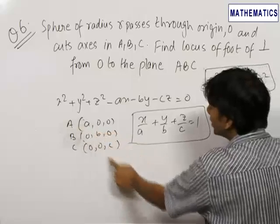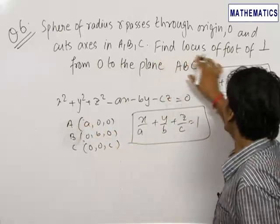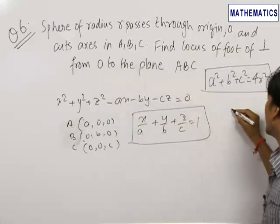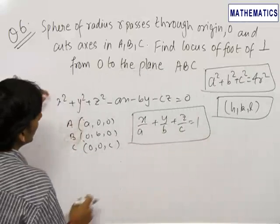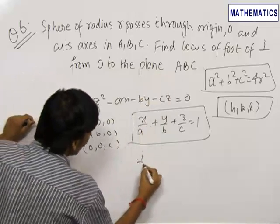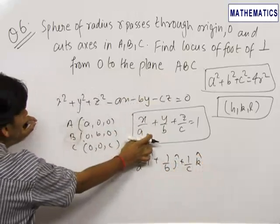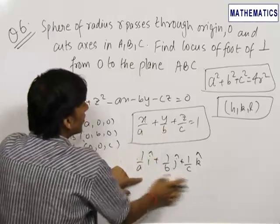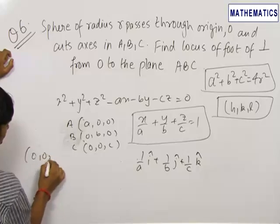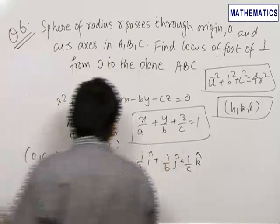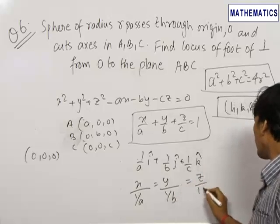We can directly write the equation of the plane when we have the three intercepts on the three axes: x/A + y/B + z/C = 1. Now we need to find out the locus of the foot of perpendicular from O to the plane ABC. Let the foot of perpendicular be (H, K, L). This point lies on the line perpendicular to the plane ABC. The normal to the plane ABC is (1/A)i + (1/B)j + (1/C)k. Therefore, the equation of the line passing through the origin with direction ratios equal to the normal is x/(1/A) = y/(1/B) = z/(1/C).